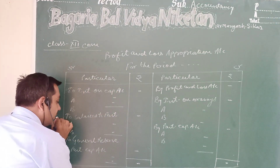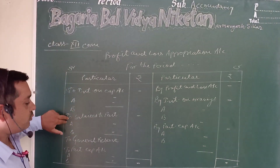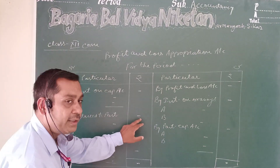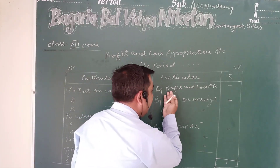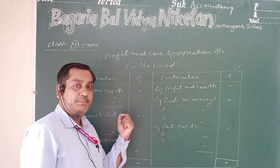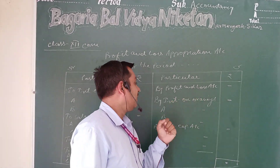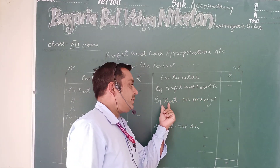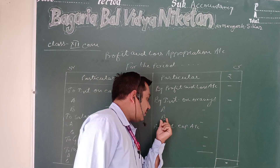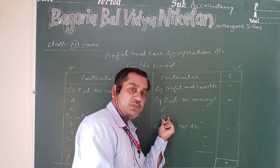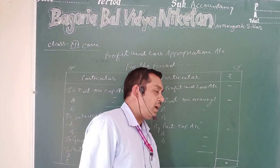If a salary is given to a partner, then salary to partner is written in the amount column. On the credit side, the profit transferred from the Profit and Loss Account to the Profit and Loss Appropriation Account is shown. Then interest on drawings is separately shown for individual partners A and B, with the amount written in the amount column.